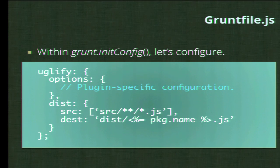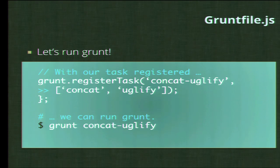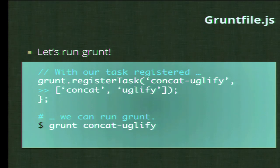With your task registered and your Grunt file in place, you can run Grunt from the command line. You can also declare different arguments when you run Grunt to run tasks in different ways — for example, running only two out of your ten tasks. There are a lot of interesting things you can do with specifying what you want to run.